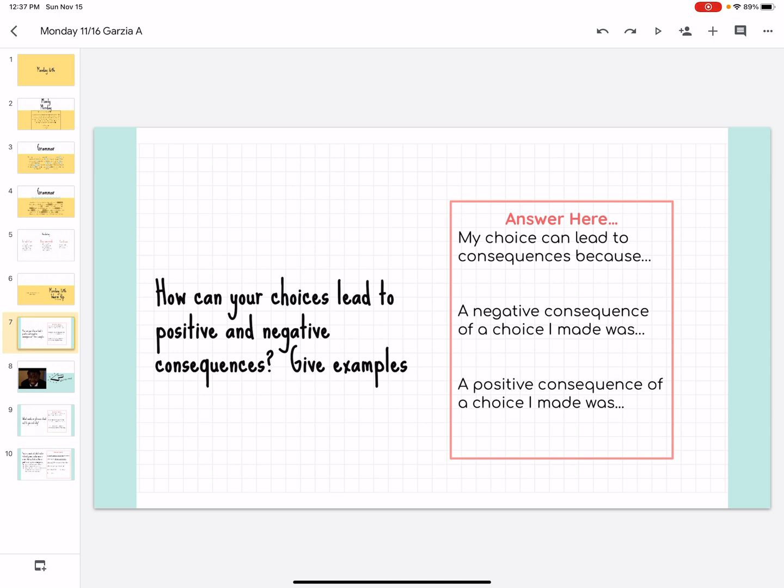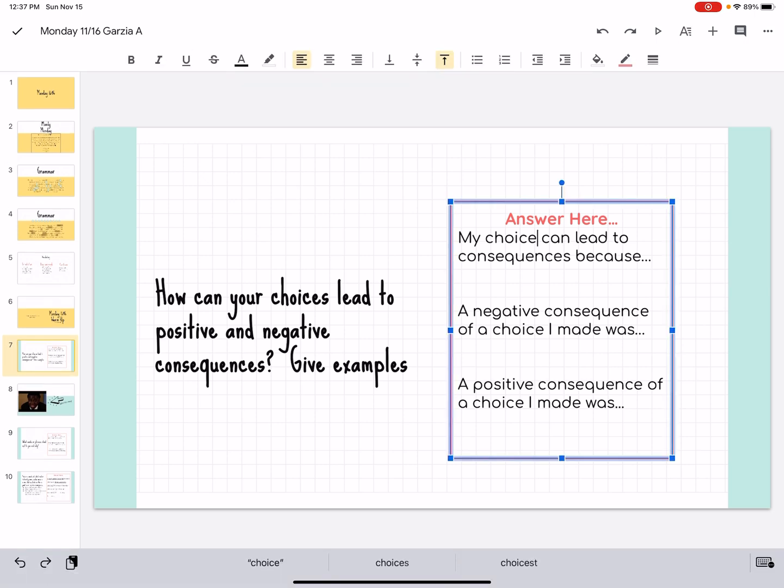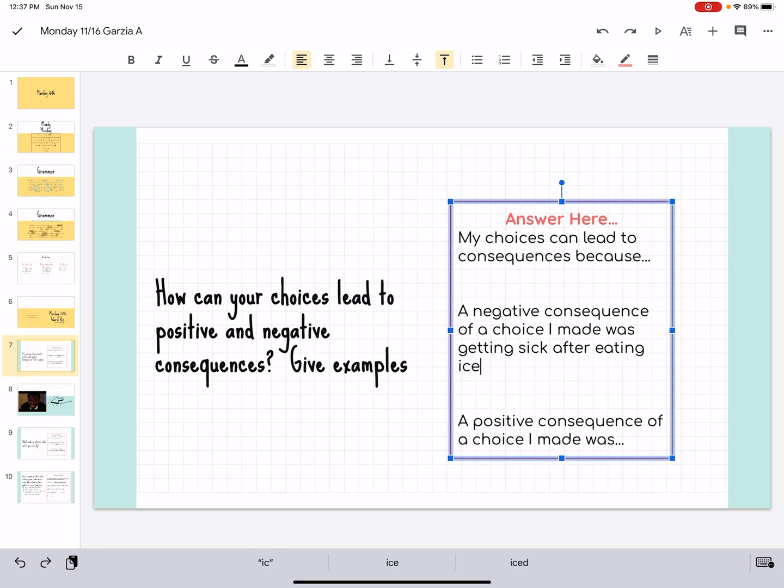Okay, so now that you have done your warm-up, I want you to think, how can your choices lead to positive and negative consequences? I want you to give examples. So, put your answers here. I gave you sentence starters too. My choices can lead to consequences because, fill in the blank. Remember when you're filling in the blank, delete those dots, please. How do your choices lead to consequences? A negative consequence of a choice I made was getting sick after eating ice cream.